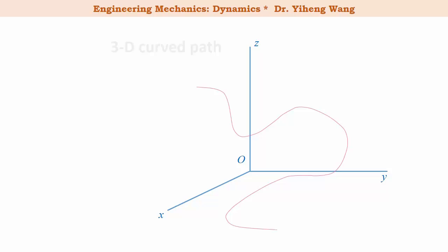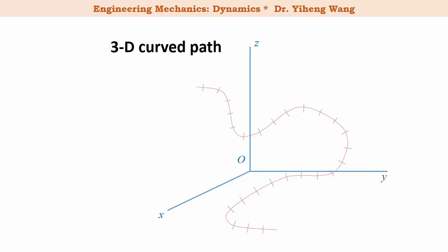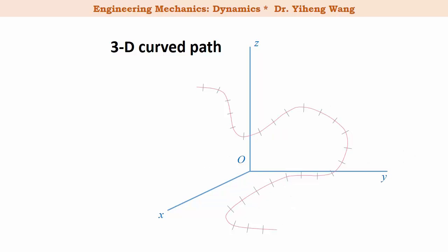Now let's look at this 3D curved path. It can be divided into small segments of curves with equal lengths. When the segments get small enough, each one of them approaches an arc, which is a segment of a circle. We know that a circle always falls in a 2D plane. For each subsequent small segment of the path, it can also be approximated by another arc that belongs to another circle falling in another 2D plane.